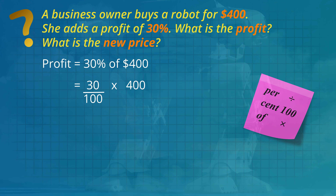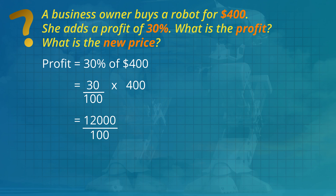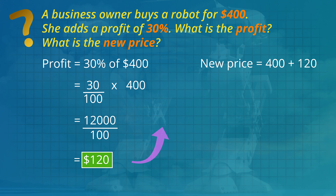First multiply the top numbers. 30 multiplied by 400 is 12,000, then divide by 100 to get the profit of $120. If we add the profit, the robot sells for $520.